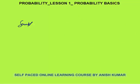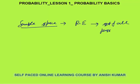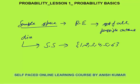Next is sample space. When a random experiment is conducted, the set of all possible outcomes is called the sample space. For example, a dice is thrown, the sample space would be {1, 2, 3, 4, 5, 6}. The bracket represents set form with elements separated by commas. This is called the sample space.